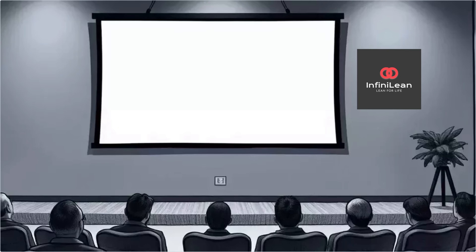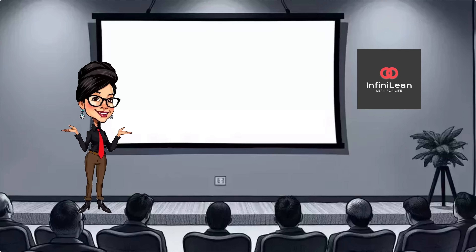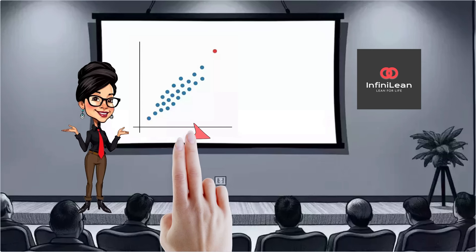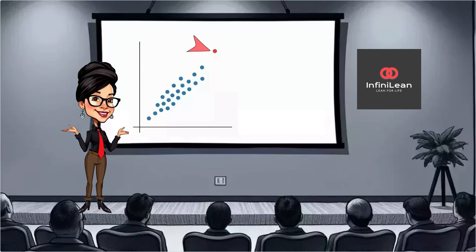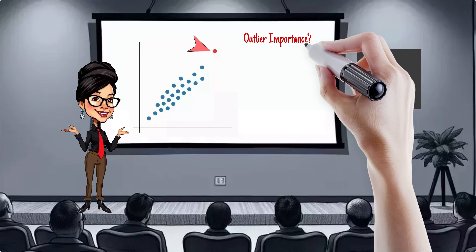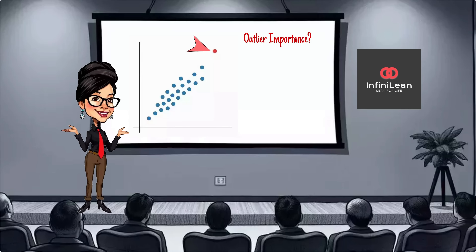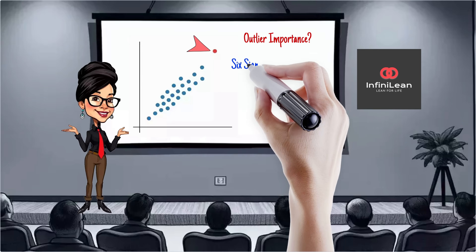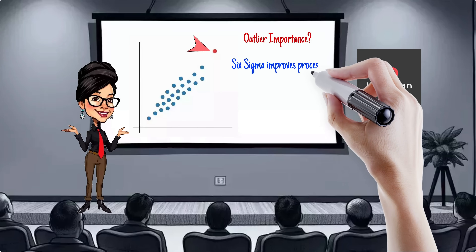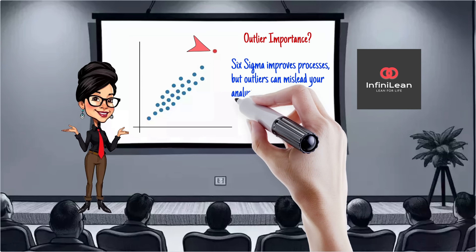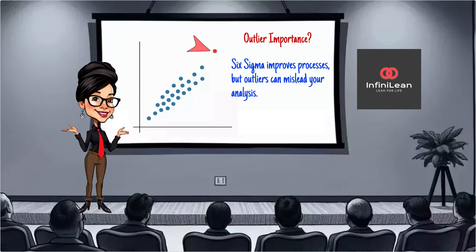So, why are outliers important in Six Sigma? Six Sigma is a data-driven methodology aimed at improving processes by reducing variation and defects. Outliers can disrupt the process improvement by distorting the analysis. Identifying and managing these outliers is crucial for achieving accurate results.